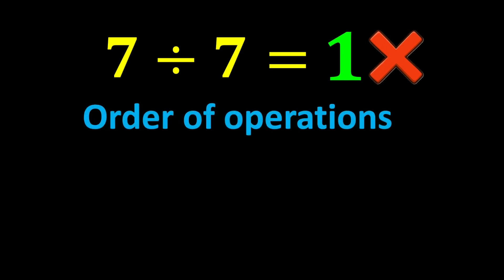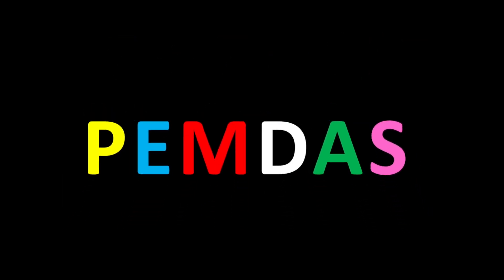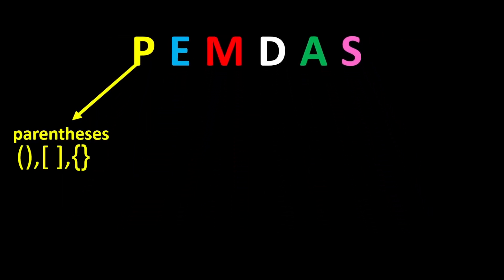The order of operations tells us that when we face a mathematical expression, we cannot start solving it from anywhere we like. Instead, we must follow a specific order called the correct order of operations. The correct order of operations is known by a short acronym called PEMDAS. P stands for parentheses.